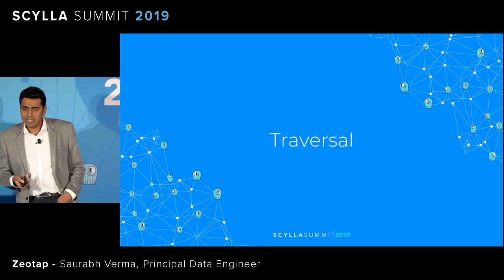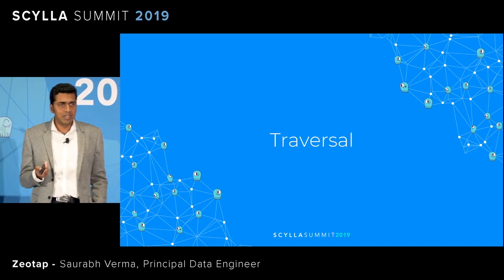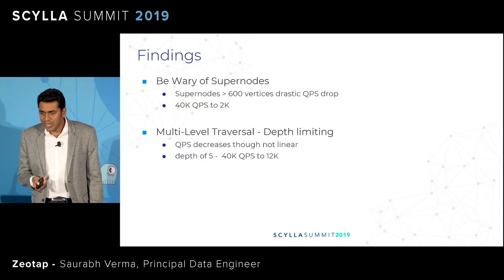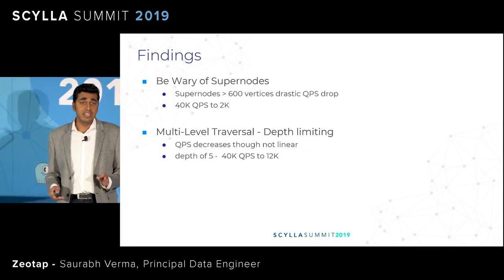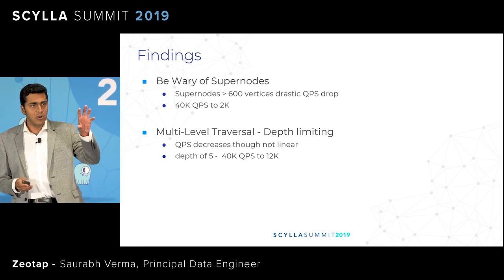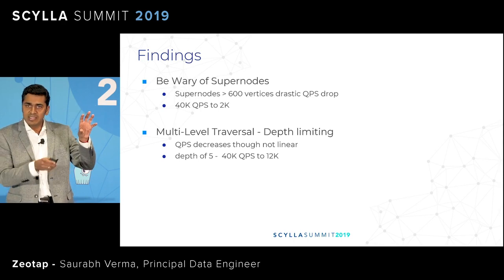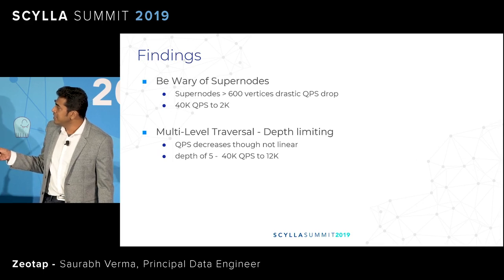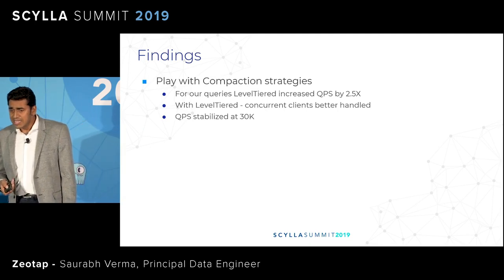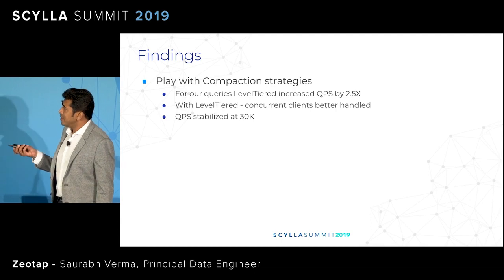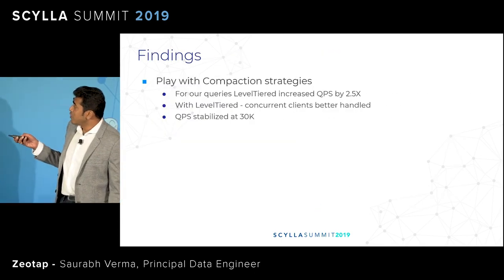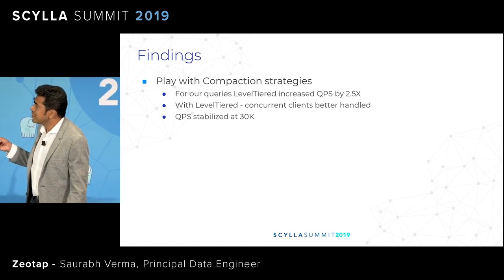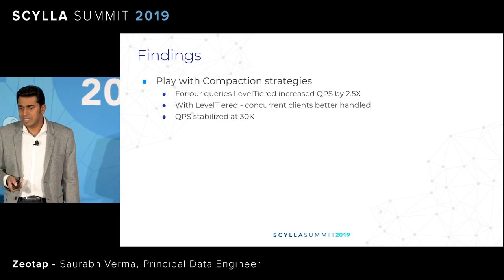Coming to traversal, which is the query access patterns — most of you would have had some problem solving in terms of shortest path algorithms, which is essentially your traversal. Going directly into the findings: one thing that can really degrade your traversal is super nodes. There are two kinds of super nodes: a node which is connected to multiple nodes together, and a node from which the depth keeps on increasing. We have presented the QPS degradation we found in terms of super nodes and multi-depth traversal — so be wary of your super nodes. Second, play with your compaction strategies: we consistently found that the leveled tiered compaction strategy is working better for us. We could stabilize QPS at somewhere around 30K for concurrent clients.